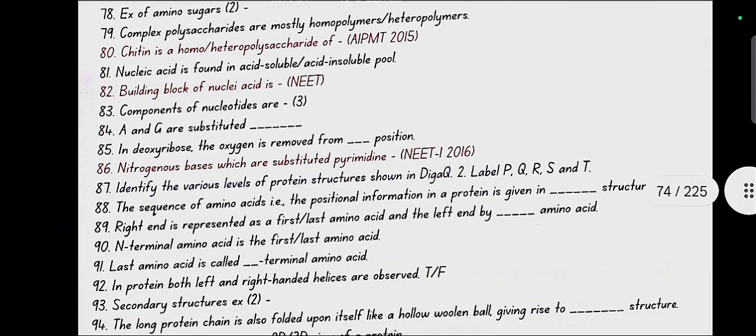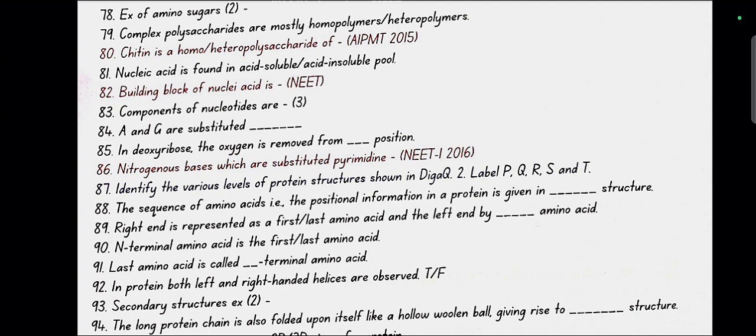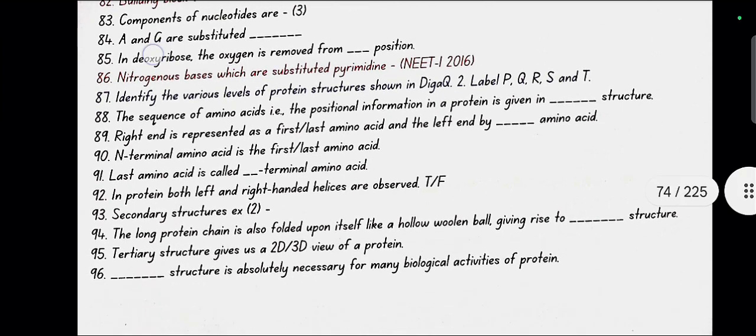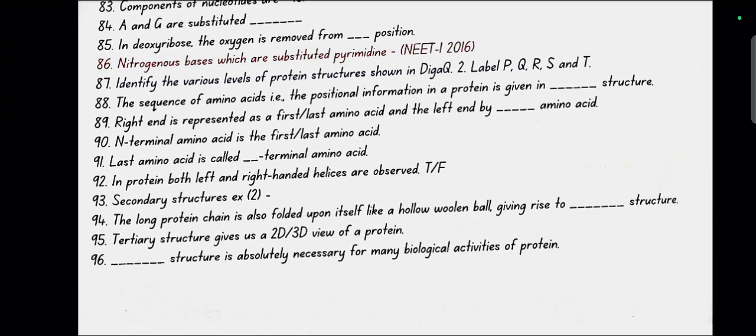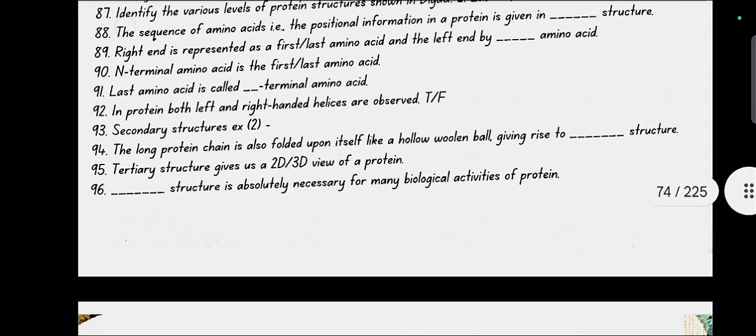The sequence of amino acids, the positional information in a protein, is given in primary structure. The right end is represented as last amino acid and left end by first amino acid. N-terminal amino acid is first amino acid. Last amino acid is called C-terminal amino acid. In protein both left and right handed helices are observed. Yes, true.